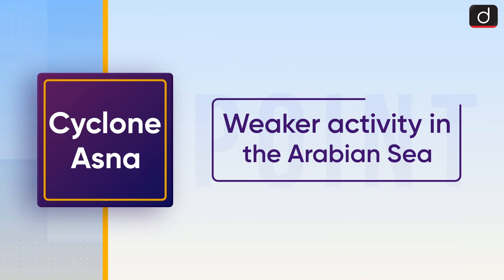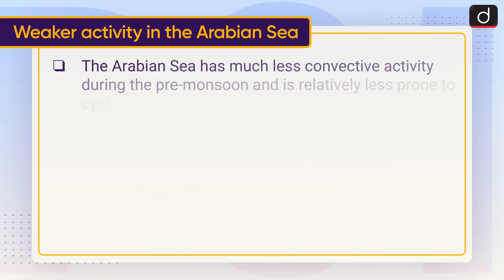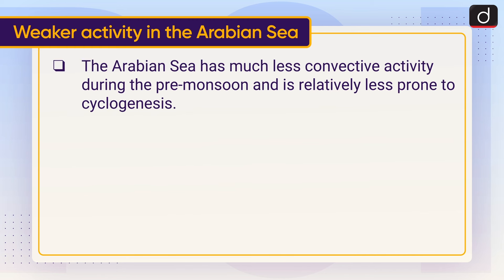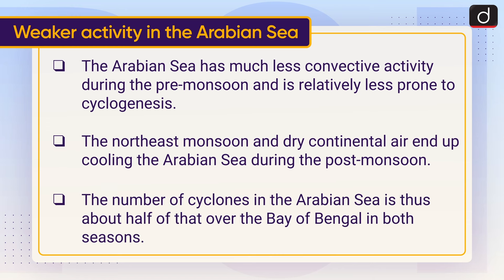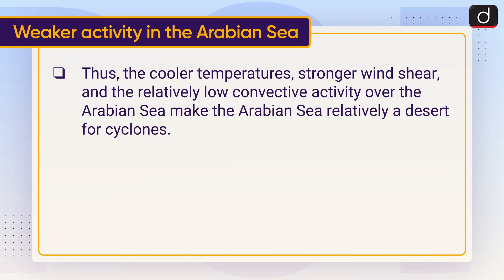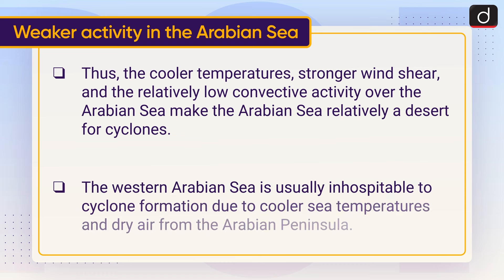Upper divergence above the sea level system is also a key condition. The Arabian Sea has much less convective activity during the pre-monsoon and is relatively less prone to cyclogenesis. The northeast monsoon and dry continental air cool the Arabian Sea during the post-monsoon, resulting in roughly half the number of cyclones compared to the Bay of Bengal. The cooler temperatures, stronger wind shear, and low convective activity make the Arabian Sea relatively a desert for cyclones. The western Arabian Sea is especially inhospitable due to cooler sea temperatures and dry air from the Arabian Peninsula.